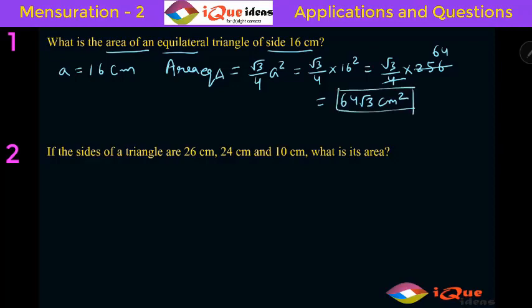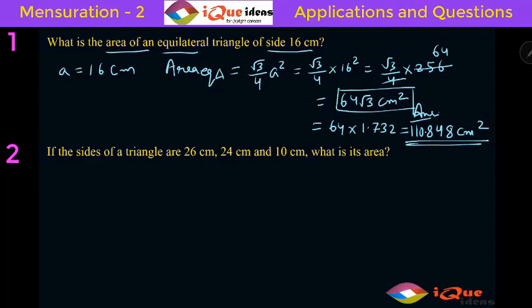Because the side is in centimeter, the area will be in centimeter square. So the answer of that question is 64 root 3 centimeter square. If the option says that you have to put the value, then you can put the value of root 3 as 1.732, so 64 into 1.732 gives 110.848 centimeter square, but that is only if it is necessary, if it is there in the options.